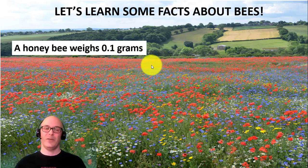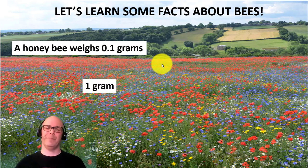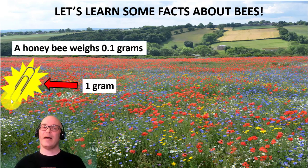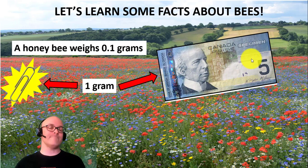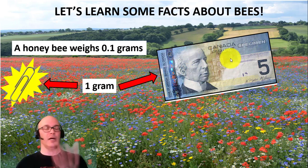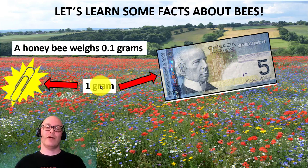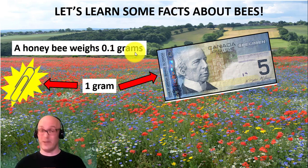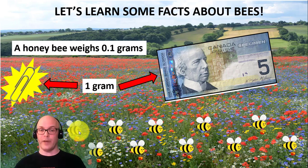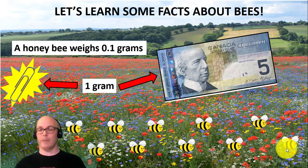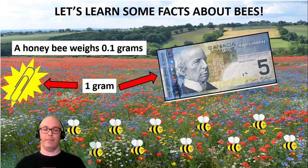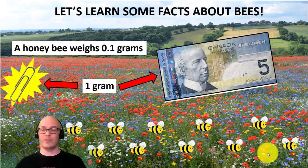They don't weigh very much. How much is one gram? Well, one gram is about the same as a paper clip. If you put a paper clip in your hand, you can hardly feel it, it's so light. One gram is also the same as a $5 bill or a $10 bill. So if one gram is about that heavy, and a honeybee weighs 0.1 grams, you'd need 10 bees to make 1 gram. That's how much a bee weighs — they don't weigh very much, do they?